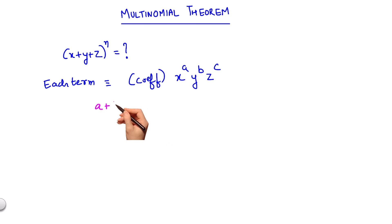z to the power c, where a plus b plus c should be equal to n and a lies between 0 and n, b lies between 0 and n, and c lies between 0 and n.